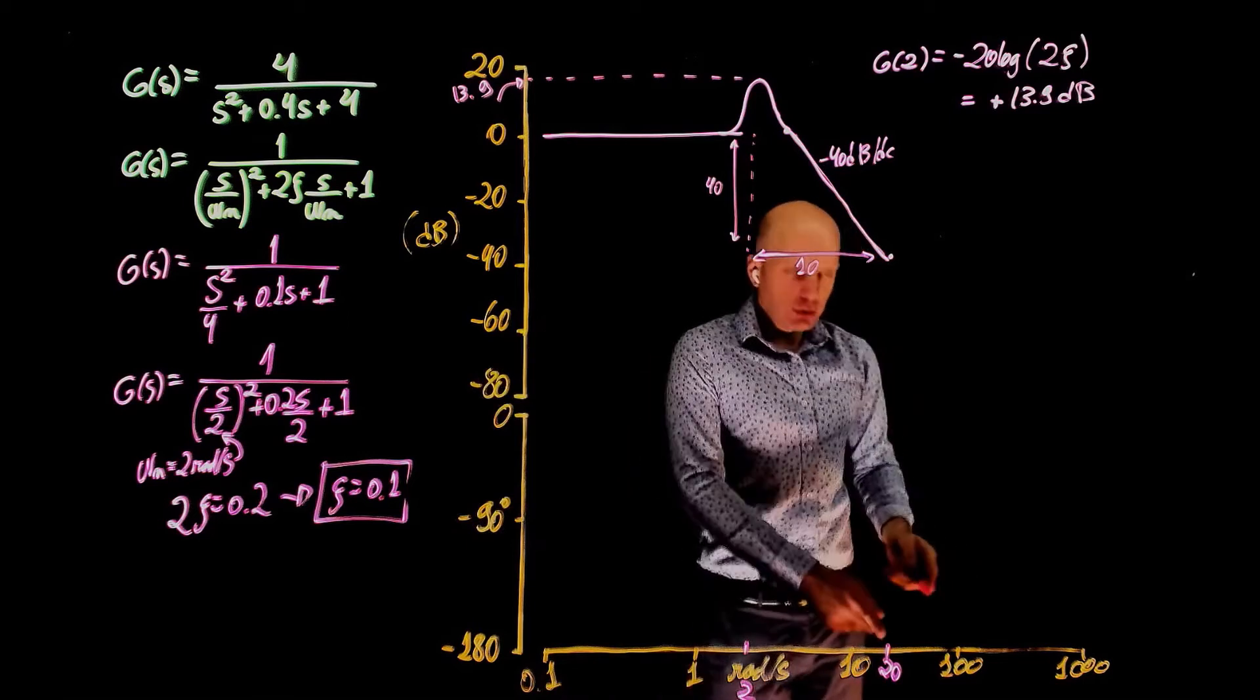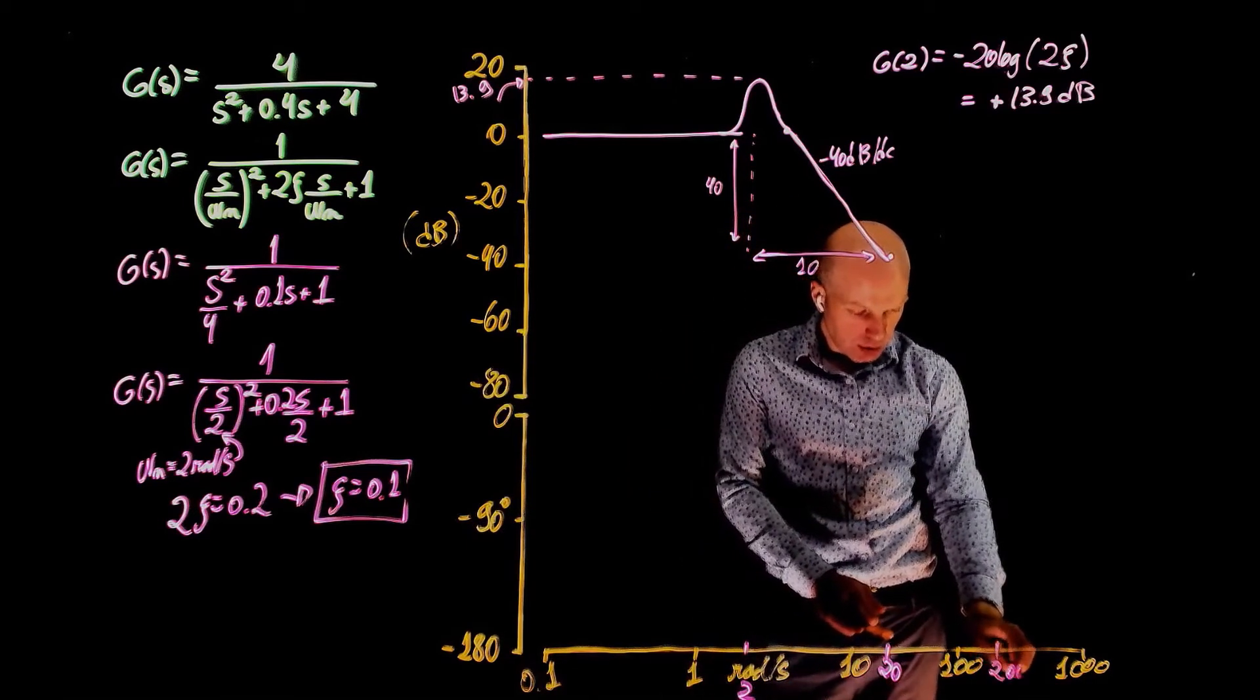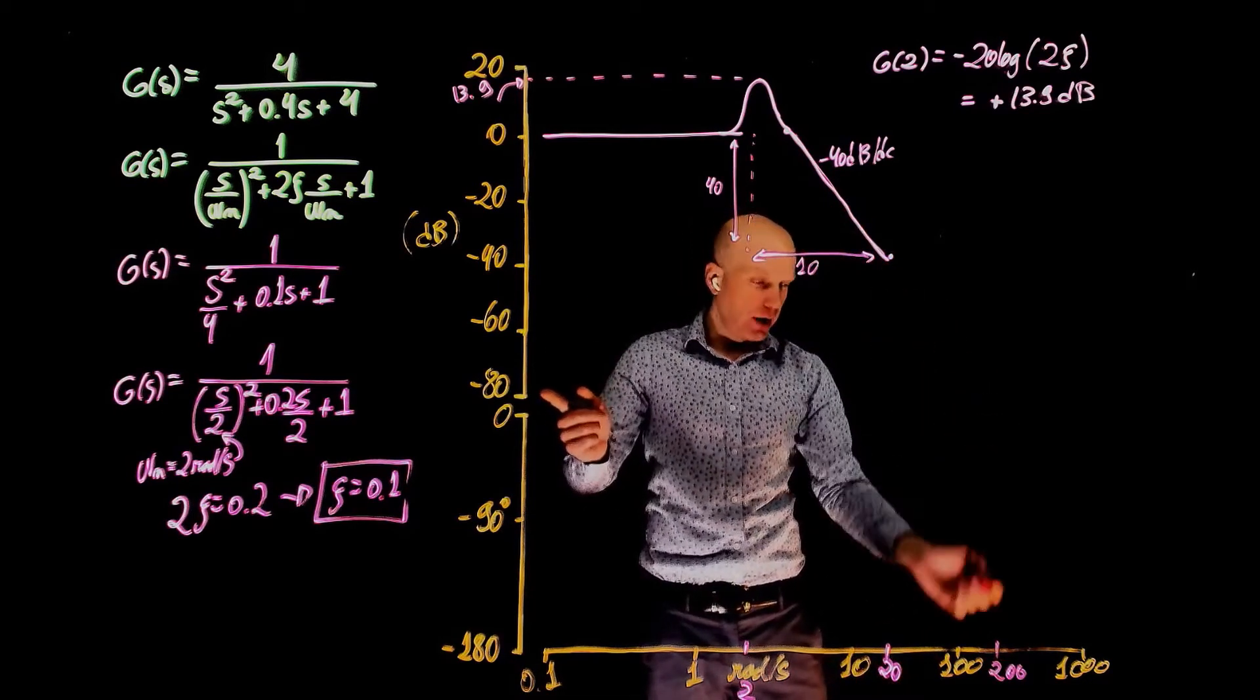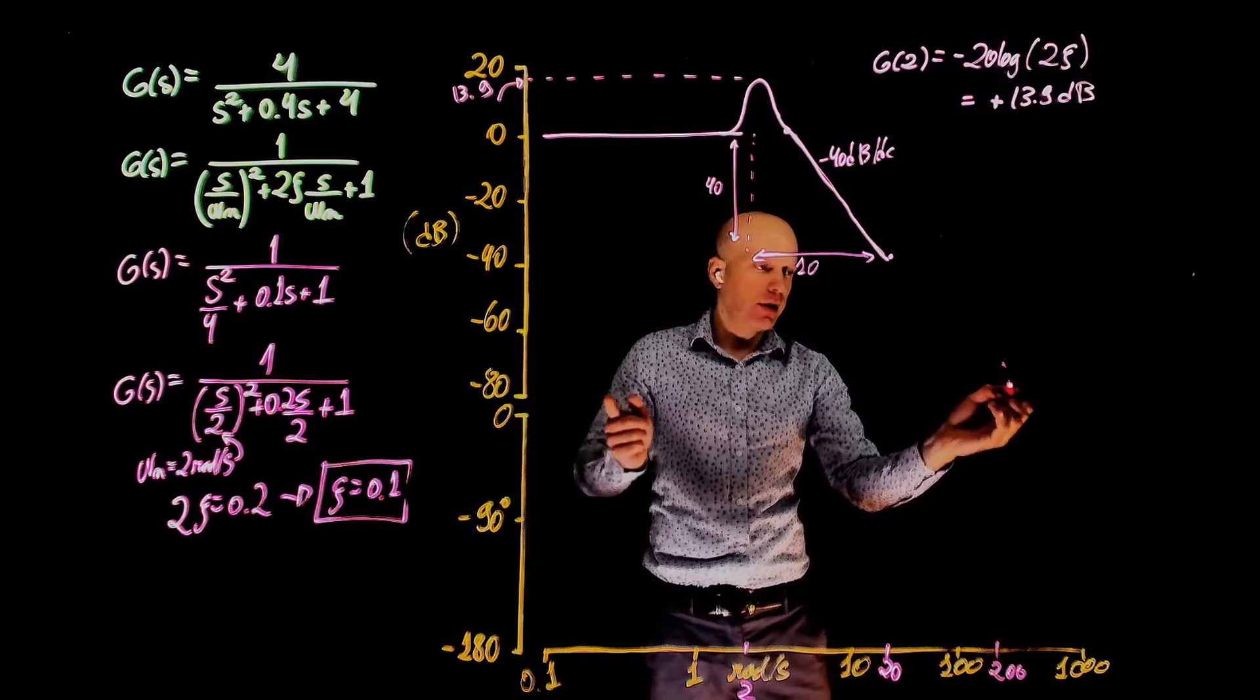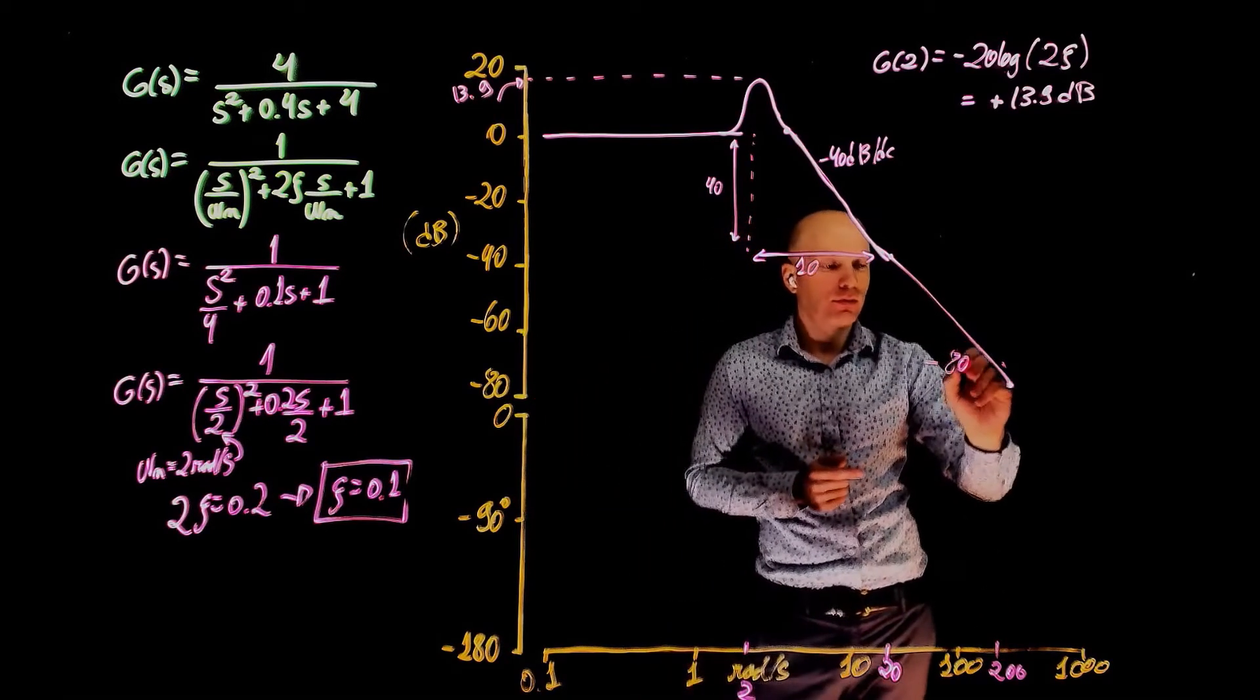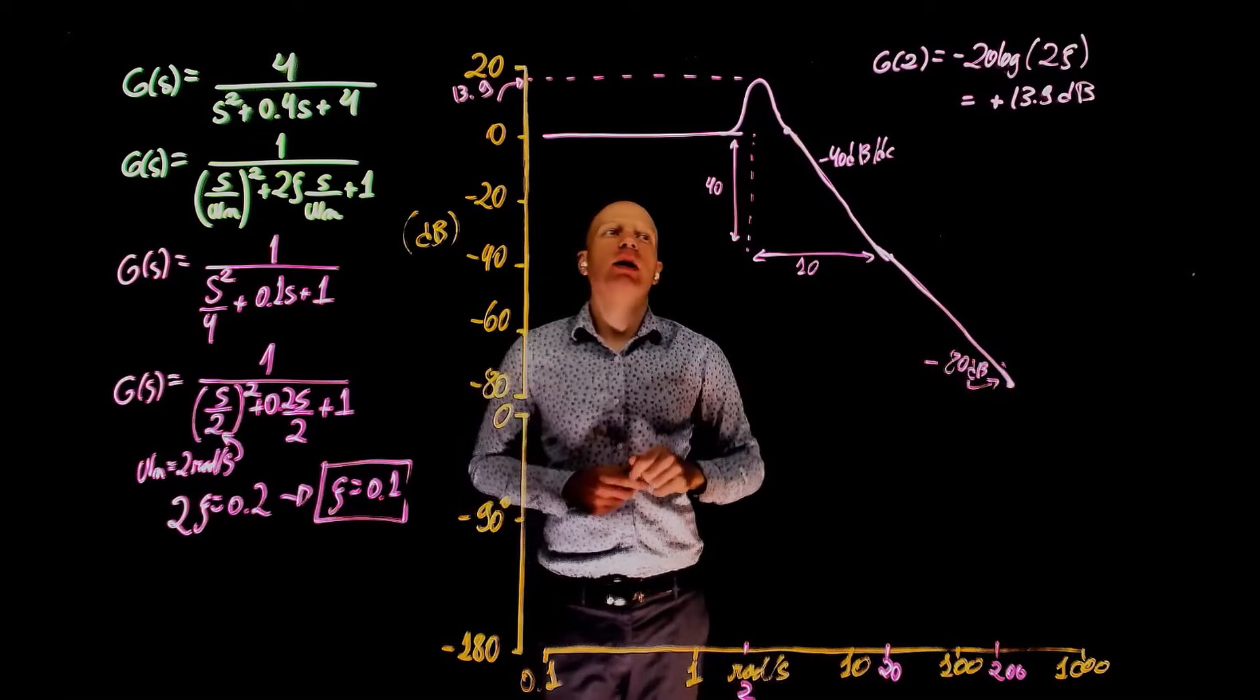Now if we go to another decade in frequency, which would be 200 radians per second, we should go down by another 40 dB. So you end up at negative 80 dB. The slope doesn't change. This is it for the magnitude.